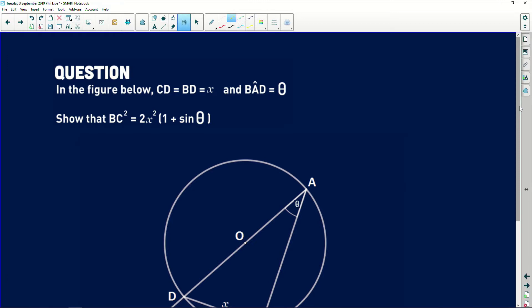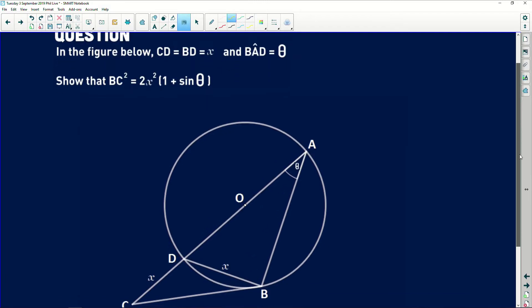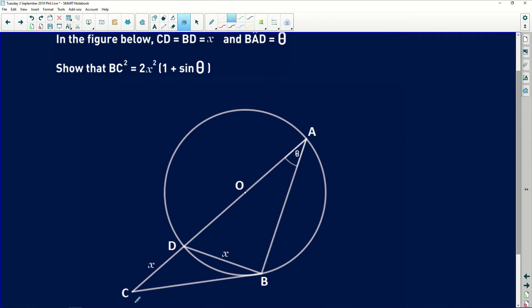In the figure below, CD is equal to BD which is equal to X. So both of these sides measure X in length. And angle BAD is theta. That's this angle over here, theta. Just one plain simple question. Show that BC squared is equal to 2X squared into 1 plus sine theta.